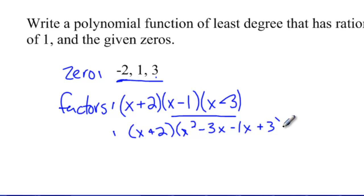I'll simplify that polynomial and get x plus two times x squared minus four x plus three, and then I'll multiply these two together as well.